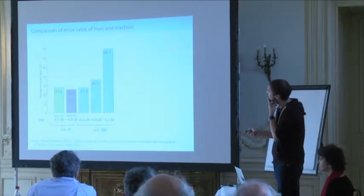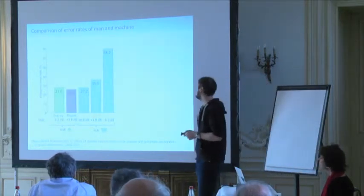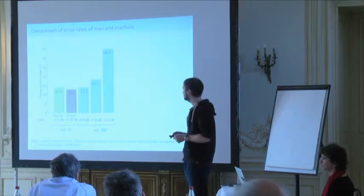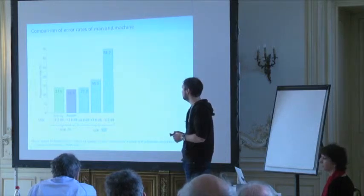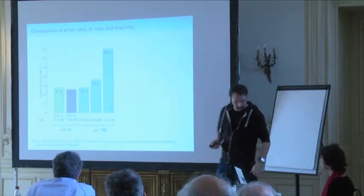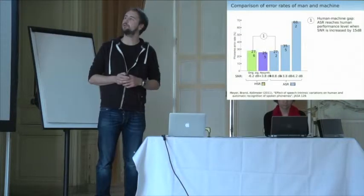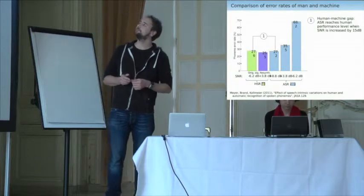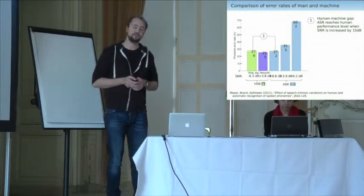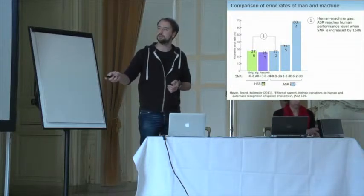These are the results: phoneme error rate for the different conditions. We have one signal-to-noise ratio for original signals, chosen to be approximately minus 6 dB based on pilot experiments, and one for resynthesized signals at approximately plus 4 dB. Considering these word error rates as approximately equivalent, comparing ASR directly to HSR with original signals, ASR reaches human performance only when the signal-to-noise ratio is increased by 15 dB — that's the difference between minus 6 dB and plus 9 dB.